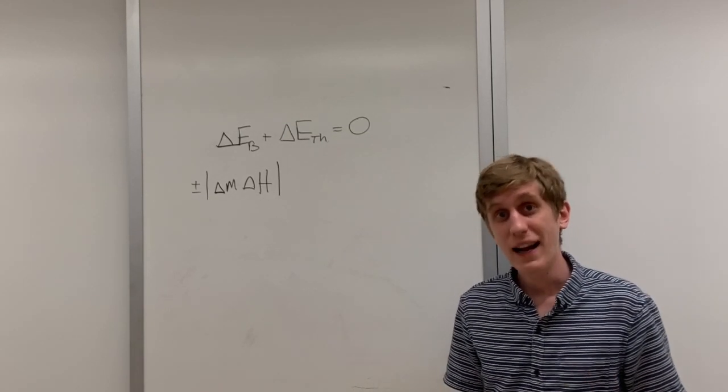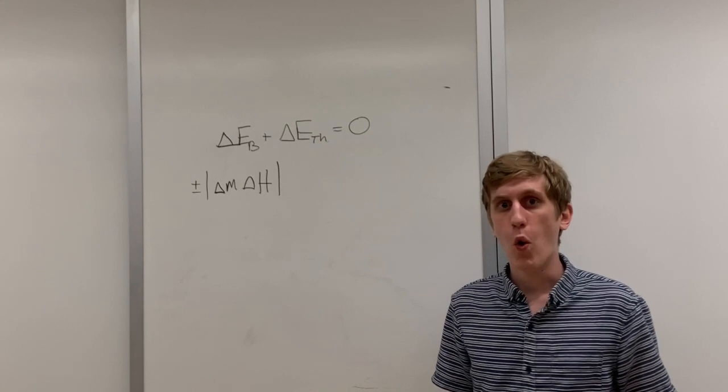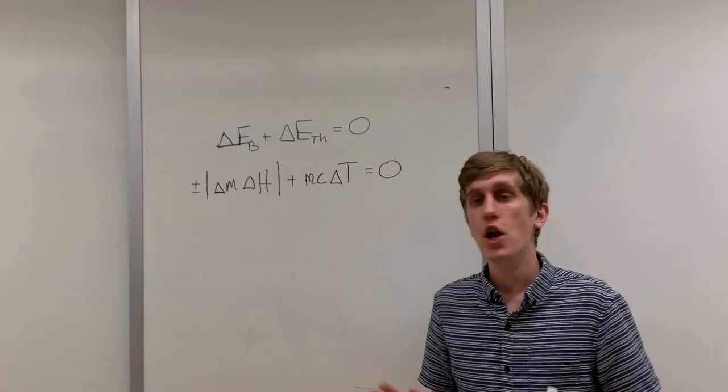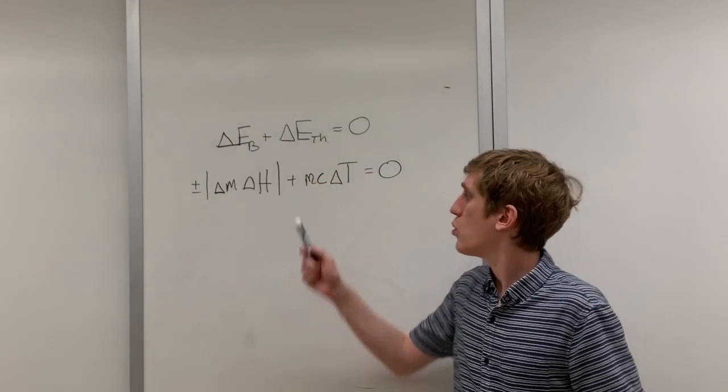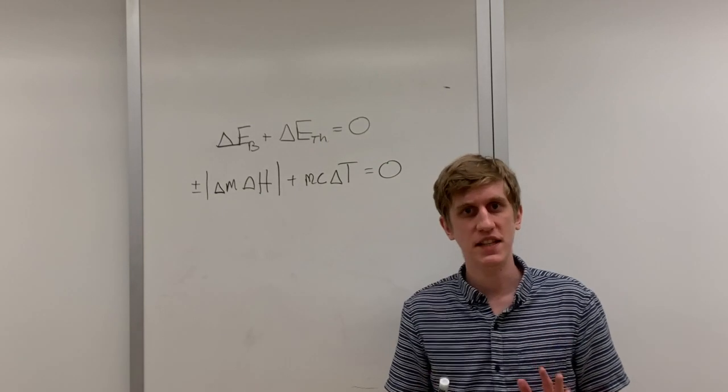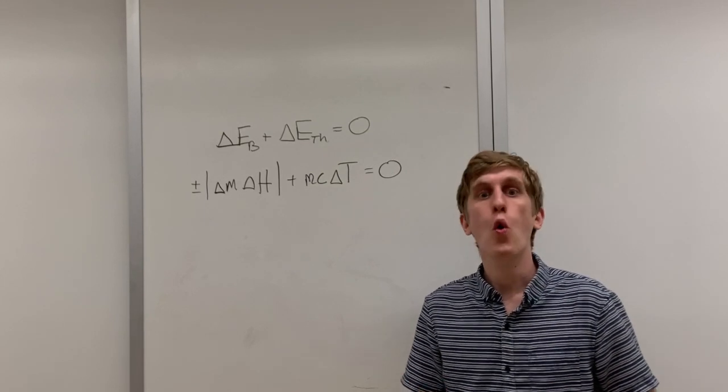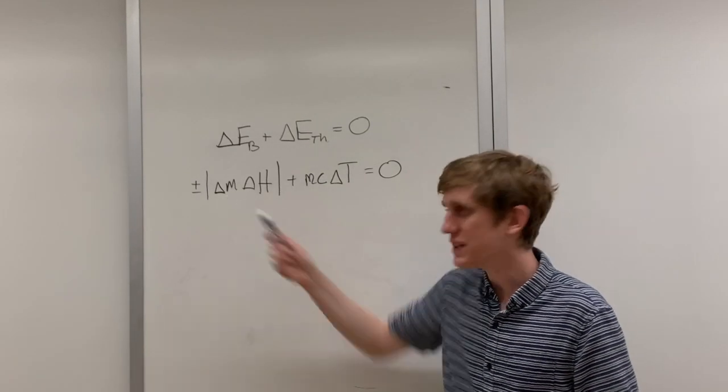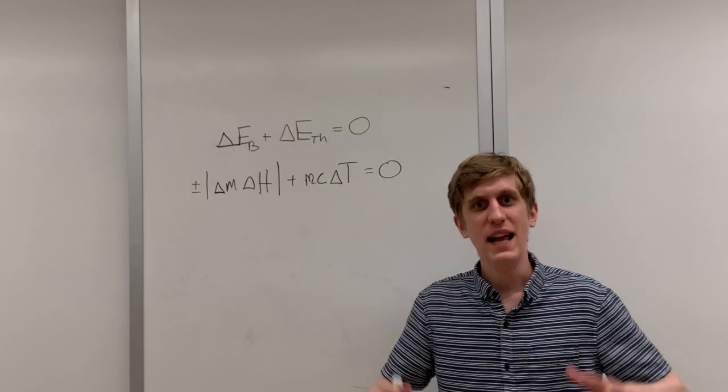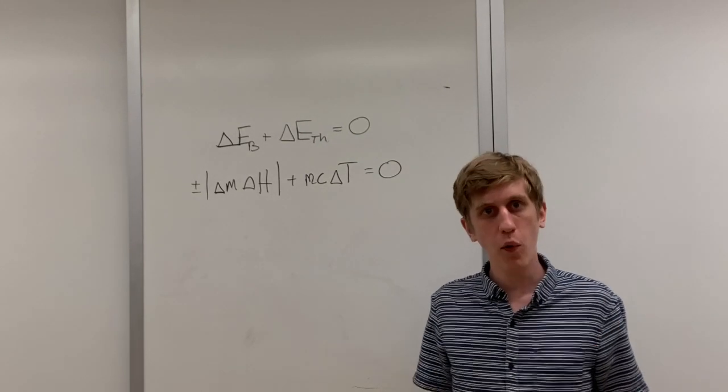The other term here is the change in the thermal energy. You may know this from chemistry as m c delta t or m cap. Writing it out it looks like this. Just as with the bond energy system m represents the mass of the substance. Notice though that in this piece we have an m whereas in this piece we have a delta m. When you're going through a phase change it is possible that not all the substance will change its phase. That's why we have a delta m here to represent only the amount of substance that is actually changing. However in the thermal energy system the entire substance has to change its temperature together so we just use m the total mass of the substance.